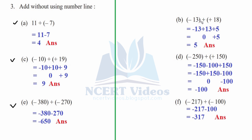Part b: minus thirteen plus eighteen. Signs are different, so we use the splitting method. Write minus thirteen as it is; eighteen is bigger, so split it: eighteen equals thirteen plus five. Now thirteen and minus thirteen cancel out, leaving plus five. Therefore five is your answer. Part d: negative 250 plus 150. Signs are different; split 250 in terms of 150: 250 equals minus 150 and minus 100.